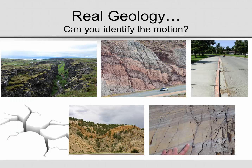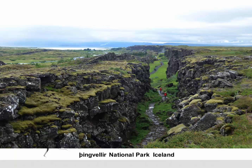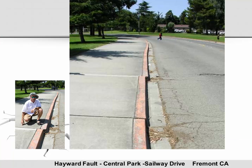Now let's take a look at what this looks like with real geology. Can you identify the motion from these real images? Let's take a look at these five different features. Thingvellir National Park in Iceland is one of the classic locations where the earth is splitting apart. On the right-hand side of the picture we see the North American plate, and on the left side the European plate. As the plates are splitting apart, this rift or gap is opening up. This occurred through divergent motion.